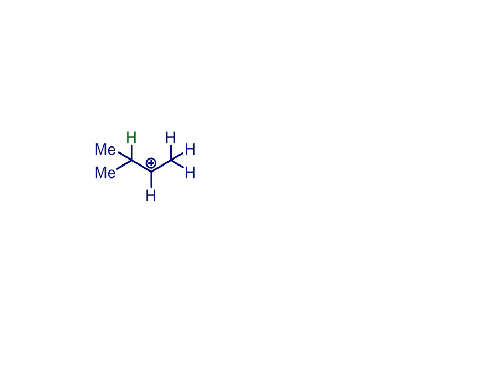Given that more substituted carbocations are more stable, it turns out that carbocations are prone to rearrange via bond migration reactions like this one, where a hydrogen moves from one carbon to the carbon next door, turning a secondary carbocation on the left into a tertiary carbocation on the right.